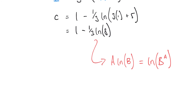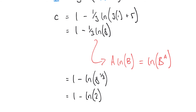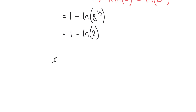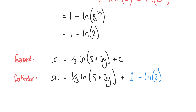Applying that law here: c equals 1 minus (1/3) ln(8), which equals 1 minus ln(8^(1/3)). Since 8 to the power of one-third is 2, we have c equals 1 minus ln(2). So we can now write the particular solution: x equals (1/3) ln(5 + 3y) + 1 minus ln(2), where all logarithms are natural logarithms.